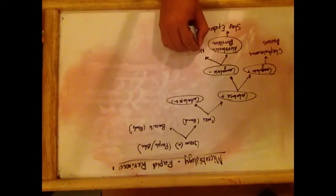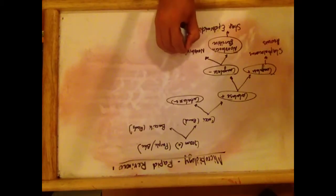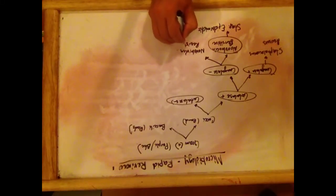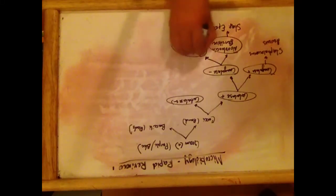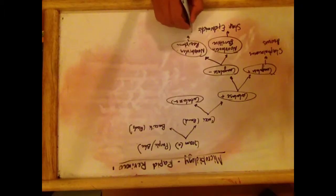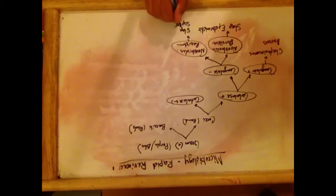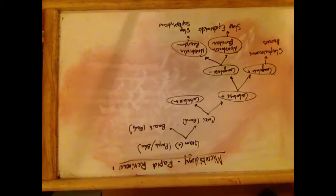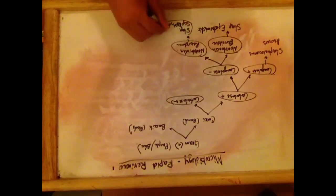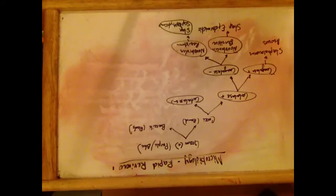So if it is novobiocin-resistant, then we know that it's going to be Staphylococcus saprophyticus. This is mainly because of UTI, so it is resistant to novobiocin.